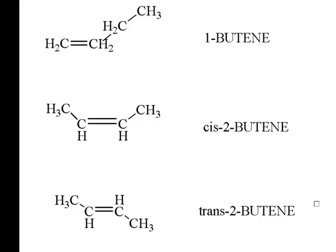The cis and the trans-2-butene together are stereoisomers of one another because their connectivity is the same. Notice the double bond is right in the middle of the compound. It's just that the way the atoms are oriented in space are different.